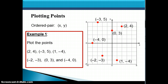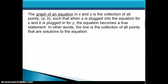So we're going to be graphing these linear equations by plotting points. It's really important that you understand how to plot these points correctly so that you can have a correct graph for your equation. The graph of an equation in x and y is the collection of all points (a, b) such that when a is plugged in for x and b is plugged in for y, the equation becomes a true statement. In other words, the graph of the equation — which for linear equations will always give us a line — is the collection of all points that are solutions to the equation.